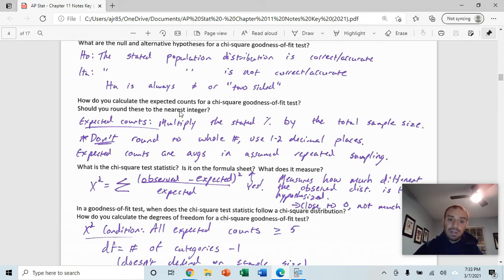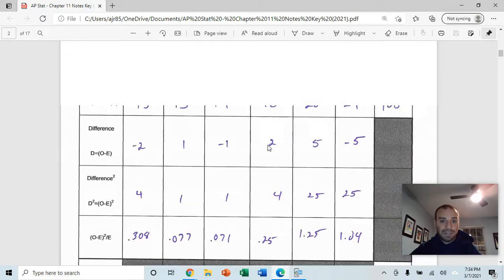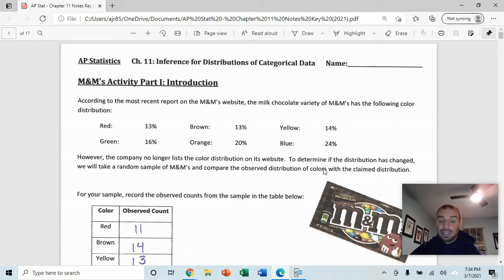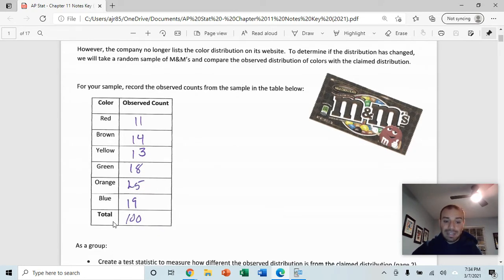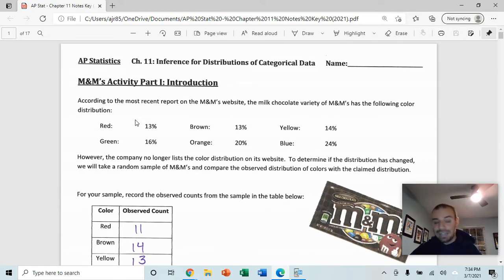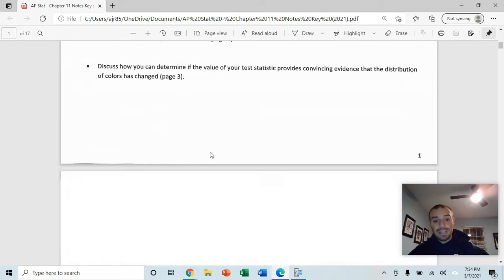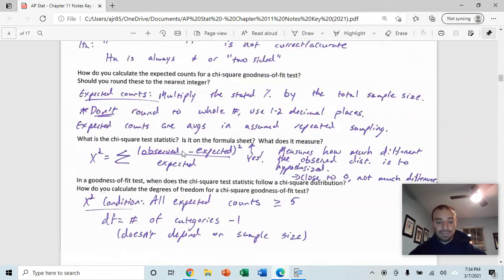The expected count. In order to find the expected counts for a chi-squared test, you're going to multiply the stated percentage by the total sample size. One important thing here is to not round those to the whole numbers and to use one to two decimal places. The reason is because expected counts are averages that are assumed to be true in repeated sampling. For example, here I'm just going to show you briefly. If this is what's said to be the distribution of M&M colors and I want to find the expected counts, I'm going to take the given percentage, say for red, and multiply it to my sample size, which in this case here was 100, to get the expected number, which in that case obviously would be 13. So in order to find your expected counts, you're taking the percentage and you're multiplying it by whatever your total sample size is for each of the different things.